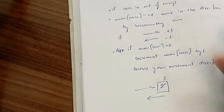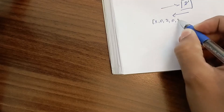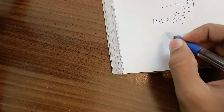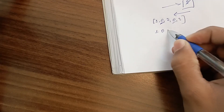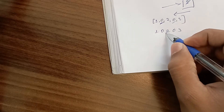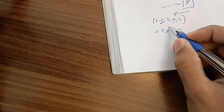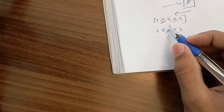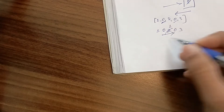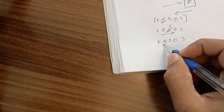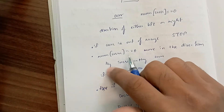In the given example [1,0,2,0,3], we can start from either zero. If we start from the first zero and move right: we encounter 2, which is greater than 0, so we decrement it to 1 and reverse direction to left. Now we are back at the zero element.